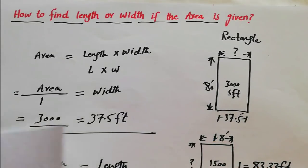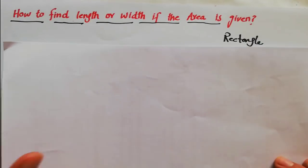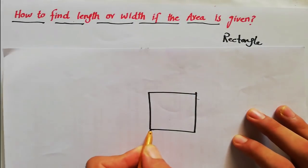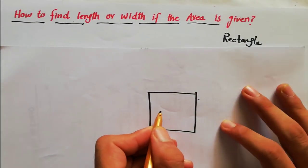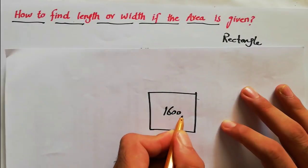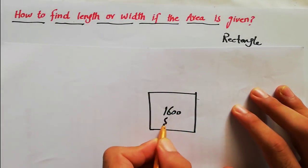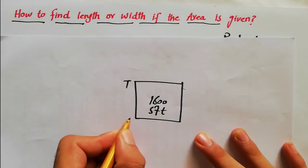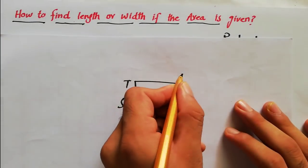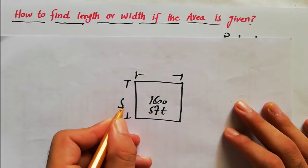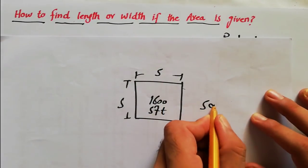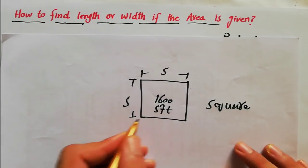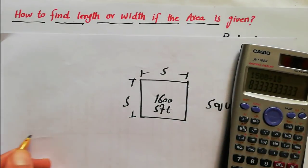Suppose you have a square shape, and a person tells us that the area is 1600 square feet. What will be the side? What will be this side and what will be this side? Each side will be equal with each other because this is a square. So we just need to find S.